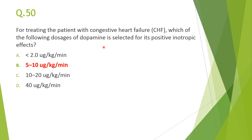The last question: for treating CHF, the dose of dopamine selected for positive inotropic action is B — 5 to 10 micrograms per kg per minute. At less than 2 mcg/kg/min, dopamine acts only on dopamine receptors. Between 2 to 10 or 5 to 10, it acts mainly on beta-1 receptors and increases cardiac contractility. At more than 10, it acts on alpha receptors, causing vasoconstriction and blood pressure increase, which is not desired in CHF. Thanks for your patience; this will solve all your doubts.